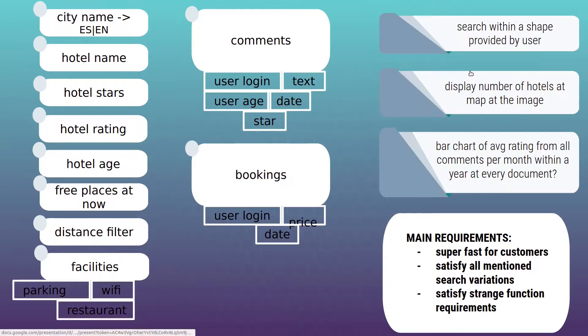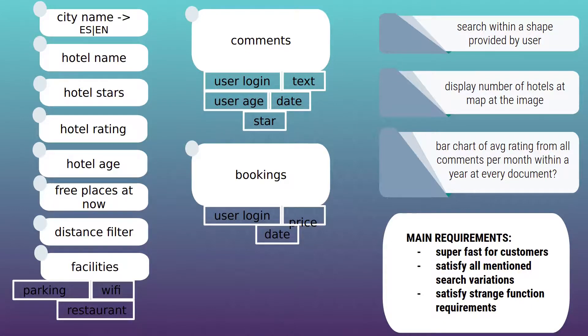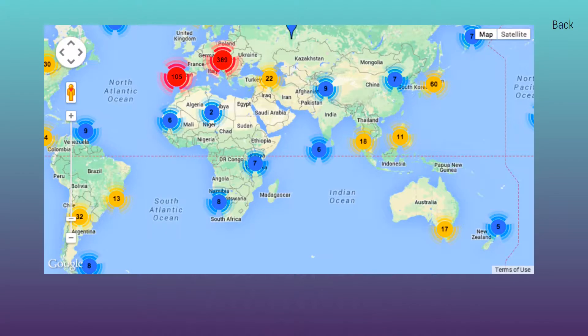In the second section I will show you how to build an advanced search system step by step, using a real example of a simplified booking application. I will also touch on the topics about Elasticsearch's geo-capabilities here.